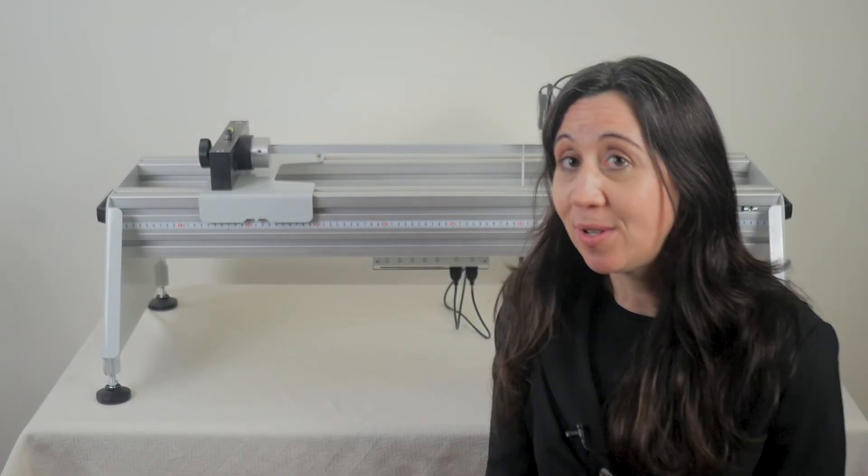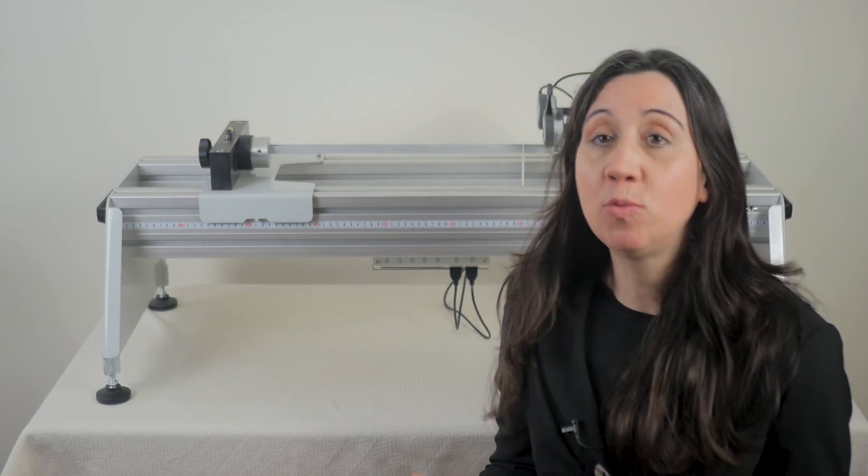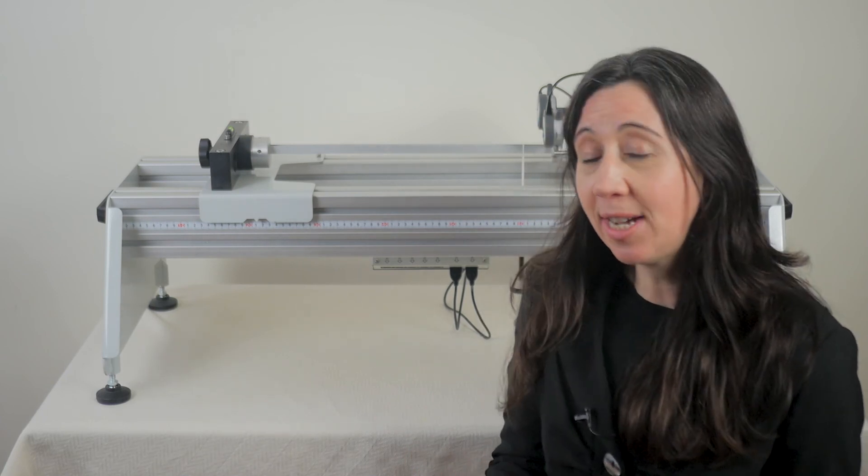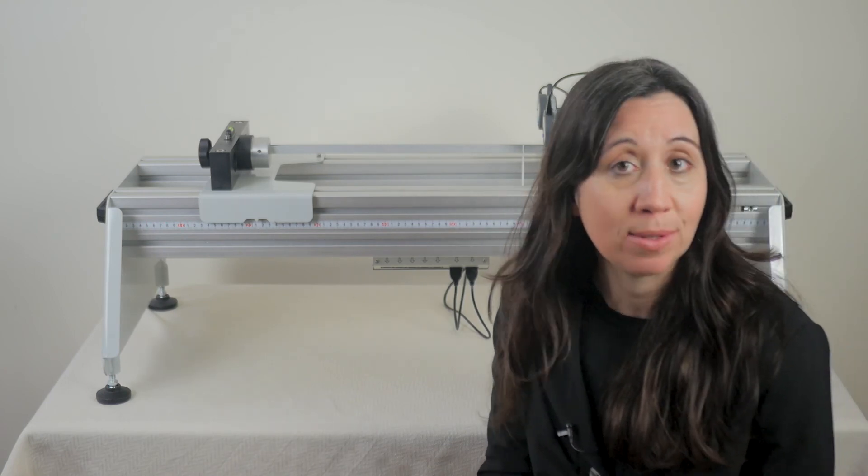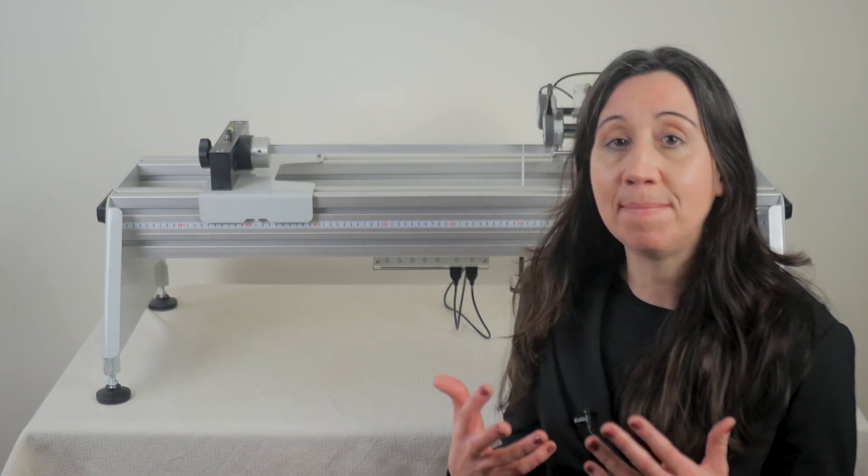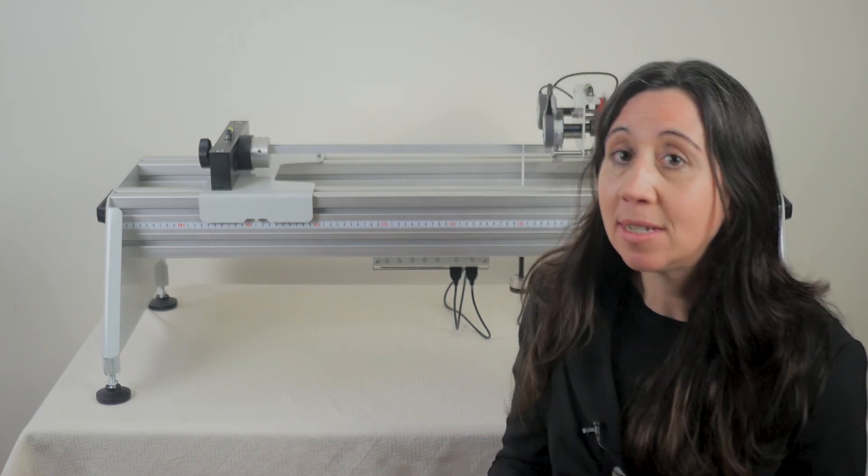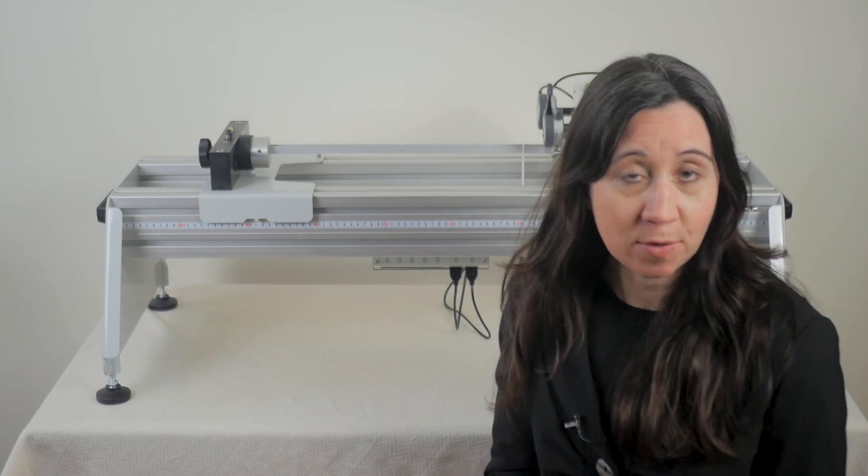We hope you found this video useful. If you would like to find out more, click on the links below. This is one of the 21 different experiments within the next generation structures range from tech equipment. You might also like to check out the Euler buckling of struts and the unsymmetrical cantilever experiments to complement the learning outcomes we've talked about today. Thank you for watching.